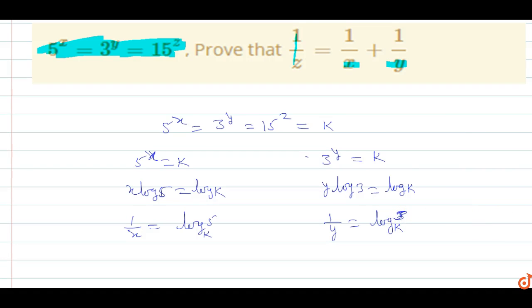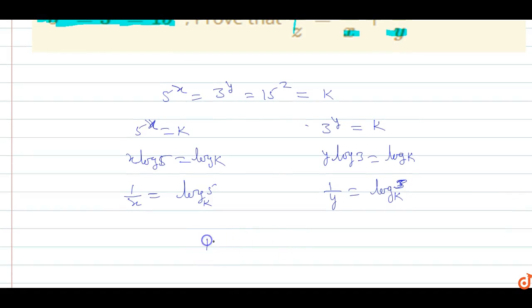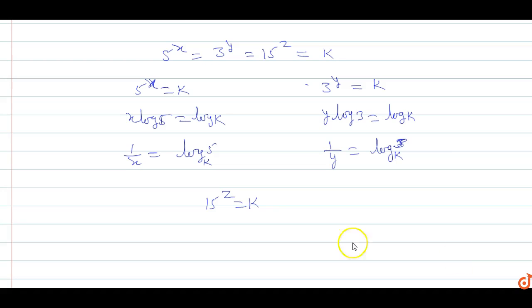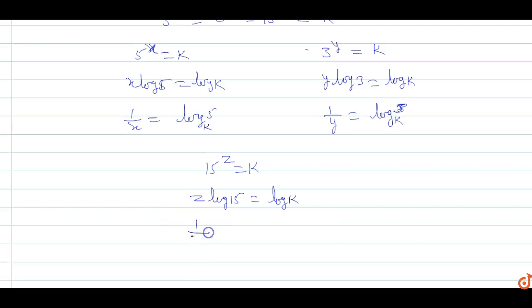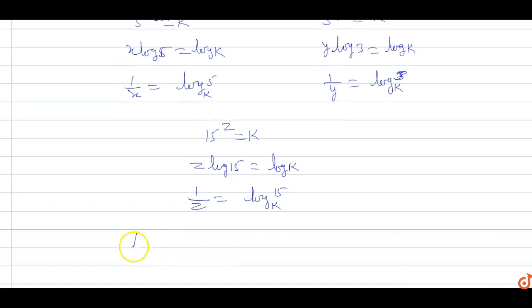We also know that 15 power z equals k. Taking log on both sides, this becomes z log 15 equals log k. So 1 upon z equals log 15 base k.